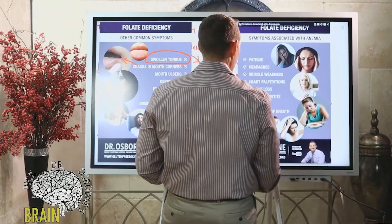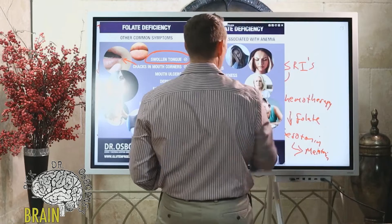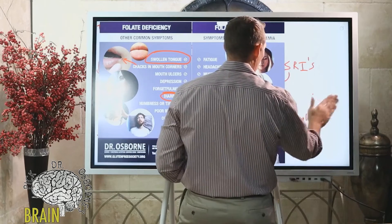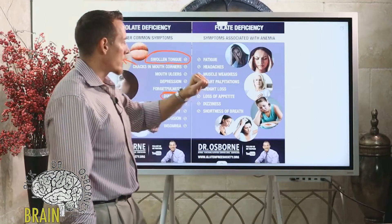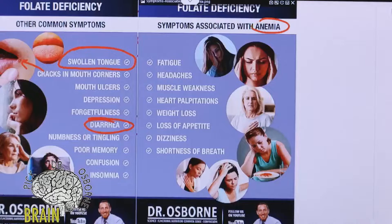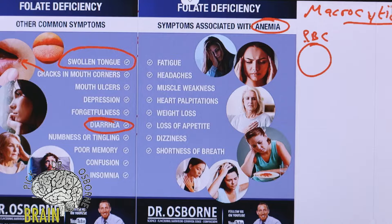Let's talk about one of the major symptoms of folate deficiency — I give it its own graphic because this is so common. One of the conditions folate deficiency creates is anemia, specifically macrocytic anemia. 'Macro' means large, 'cytic' means cell, so macrocytic anemia means large cell anemia. When red blood cells are born they're very big, and folate helps them mature.